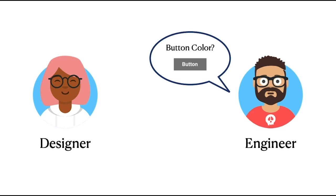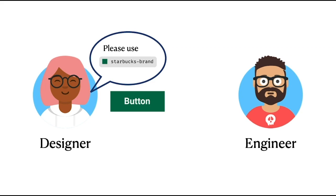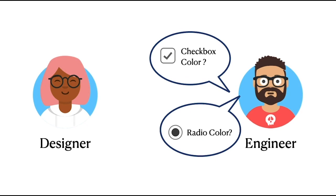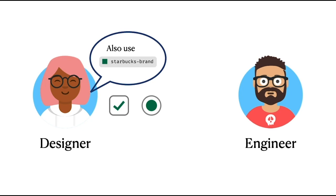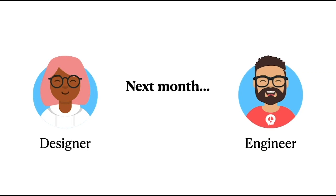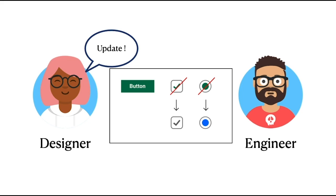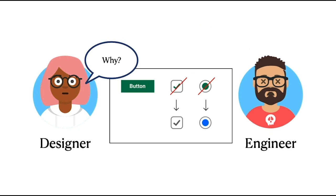Let's go back to the story. The engineer is continuing to work on the website, and one day comes back and asks the designer: what color is the button? The designer says: please use the Starbucks brand — it's the same green. The engineer asks: what about the checkbox color? What about the radio color? What color are they when they're active? And the designer says: also use the token Starbucks brand. So everything seems to be working. But next month, the designer comes back and says there's an update to the checkbox and the radio — they decided they want to change to a different color.